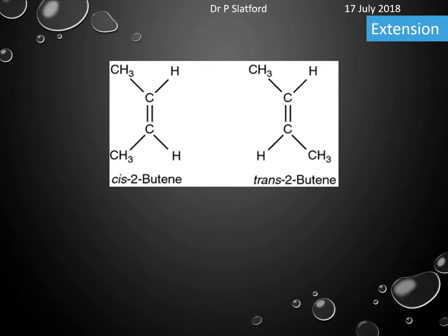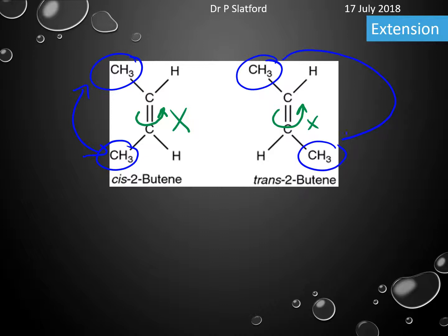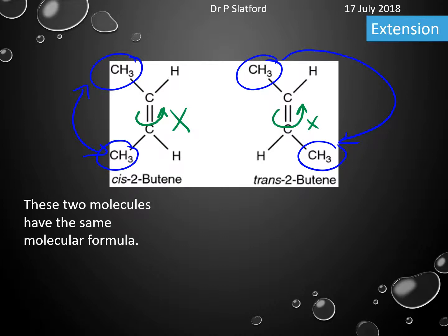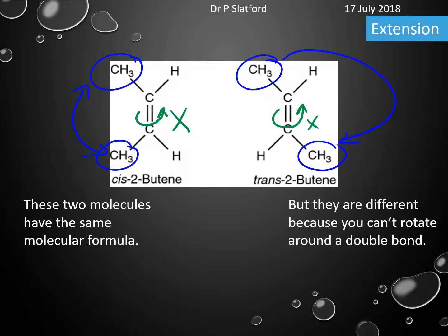Just as an extension, one of the problems with alkenes is that you can no longer rotate about the double bond — it doesn't allow rotation. That means that here my CH3 groups are on the same side, and here my CH3 groups are on opposite sides. They have the same molecular formula but are different because you can't rotate about the double bond.